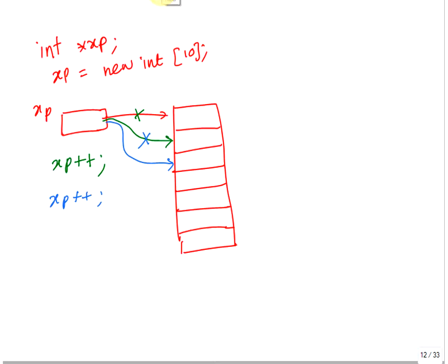Let's see another example. How about if we say xp += 3. Well, it has to go up by 4 bytes, 3 positions — position 1, position 2, position 3. Since it's 4 bytes each location, 3 times 4 is 12 bytes. This address will go up by 12 bytes, so it's going to point to the 3rd item. That's how it works.